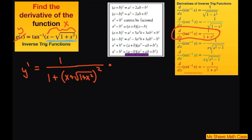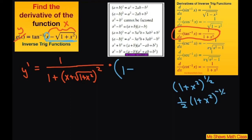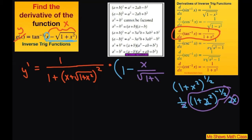Then you have to differentiate your inner function. The derivative of x is just 1, minus the derivative of square root of 1 plus x squared. That's 1 plus x squared to the 1/2 power, which gives 1/2 times 1 plus x squared to the negative 1/2, times 2x. The 2's cancel, so it becomes x divided by square root of 1 plus x squared.